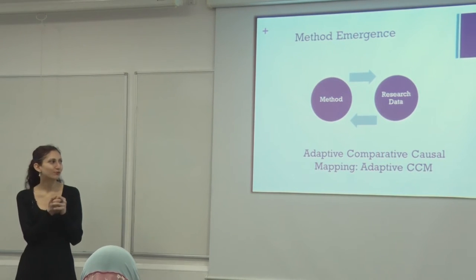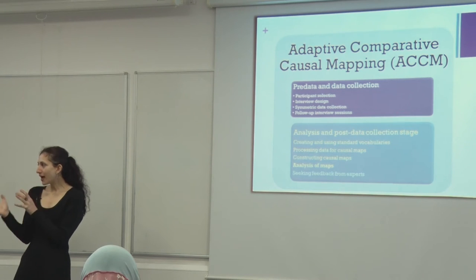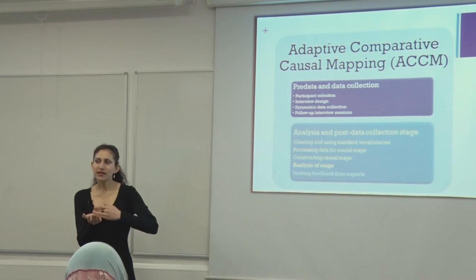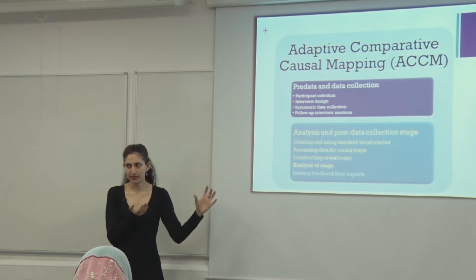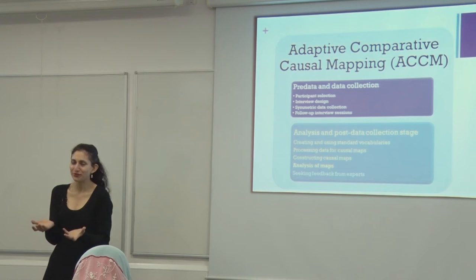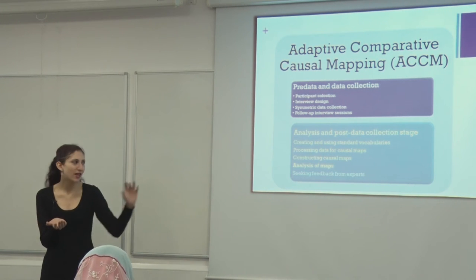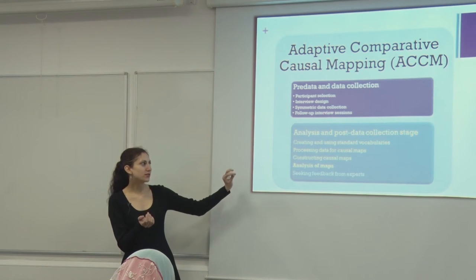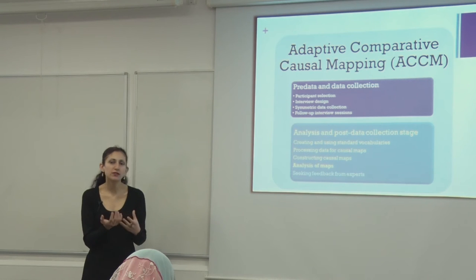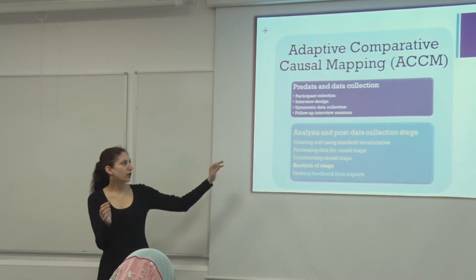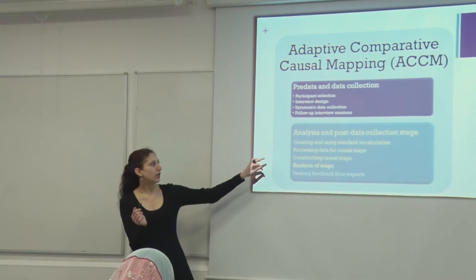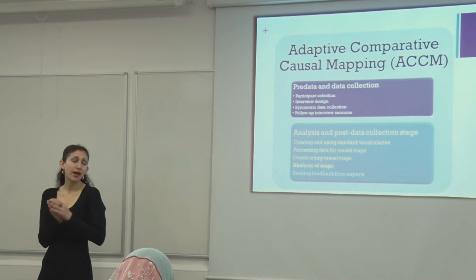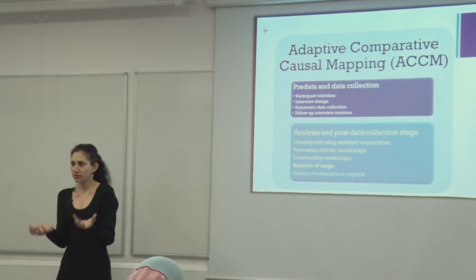Adaptive CCM is based on existing CCM, but greatly expands the analysis section, which is where all the results come from in comparative causal mapping. Because the analysis was not clear in the original CCM, we developed a framework focused on: creating and using vocabularies, processing data for causal maps, constructing them, and especially the analysis of maps — which is a major contribution of this method.